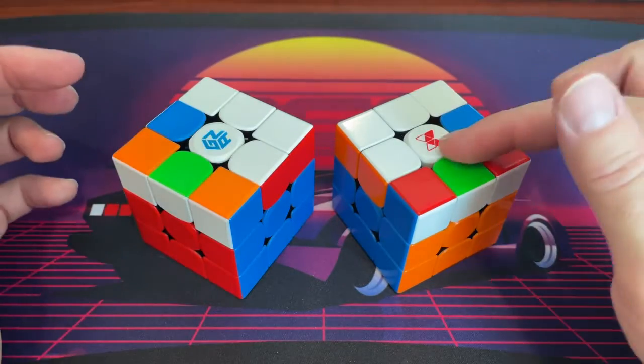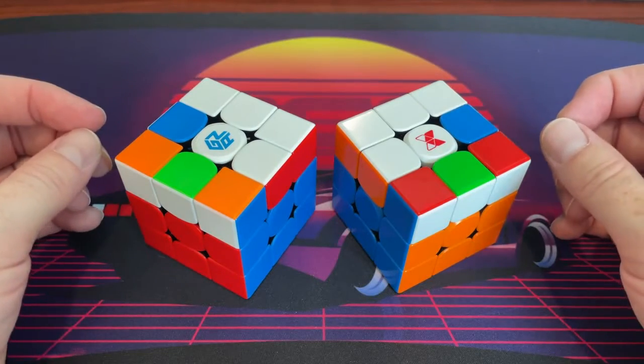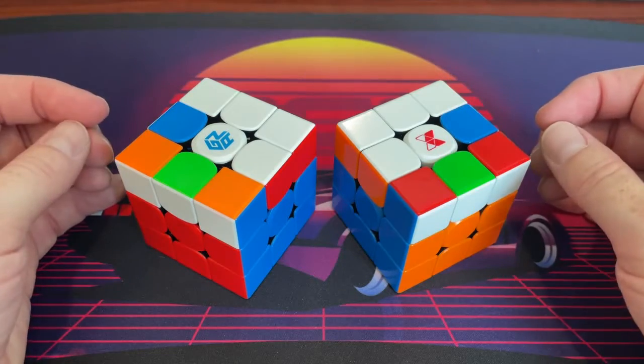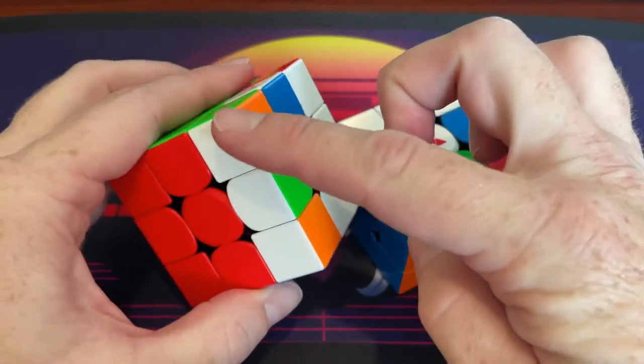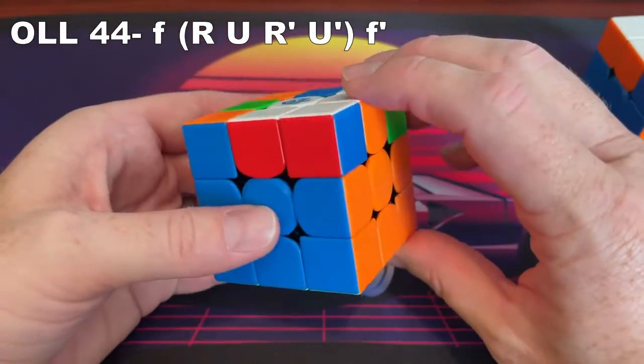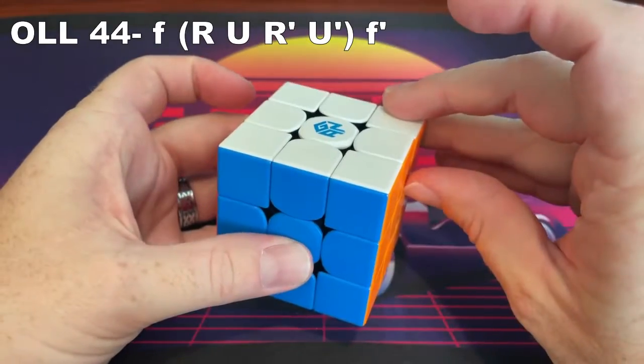OLL 44 and 43 are the first of two sets of mirror cases, and they're also really easy. It's similar to the last one, except it's a wide F move to start. You can recognize this by this 1x3 bar opposite the shape. And the case goes like this: wide F, sexy, wide F.